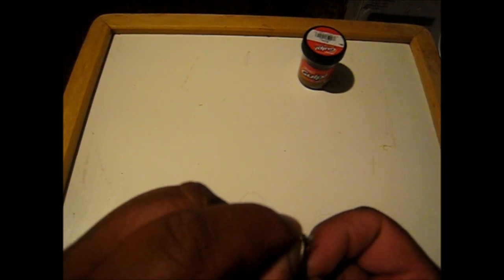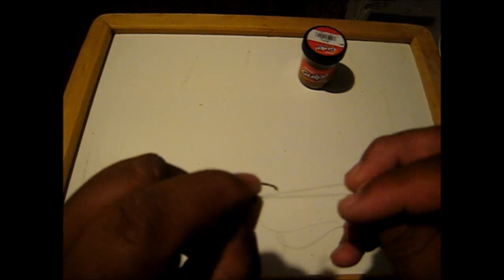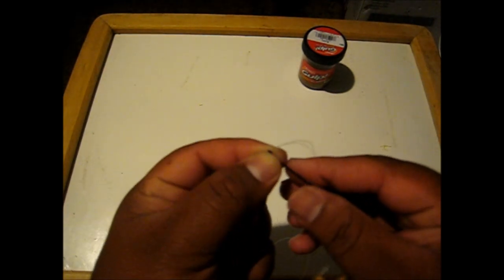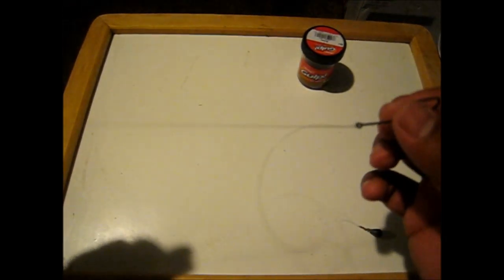Now you pull that line through, and with the loop that it creates, you wrap it around the hook, bring it back up, pull, and there you go.